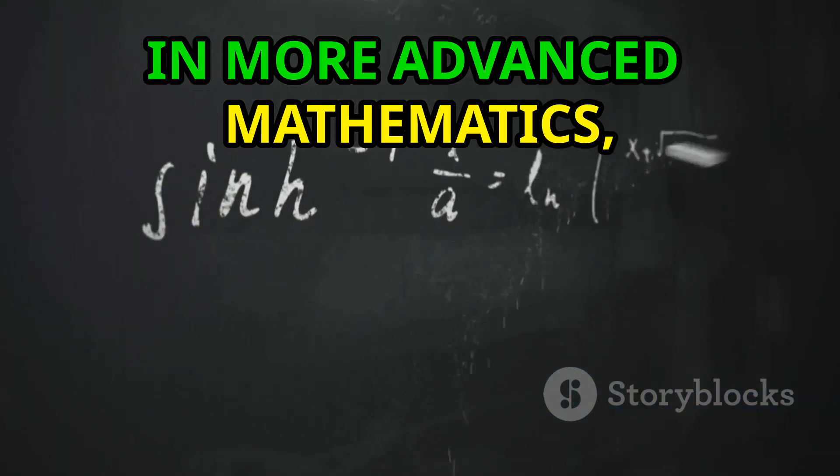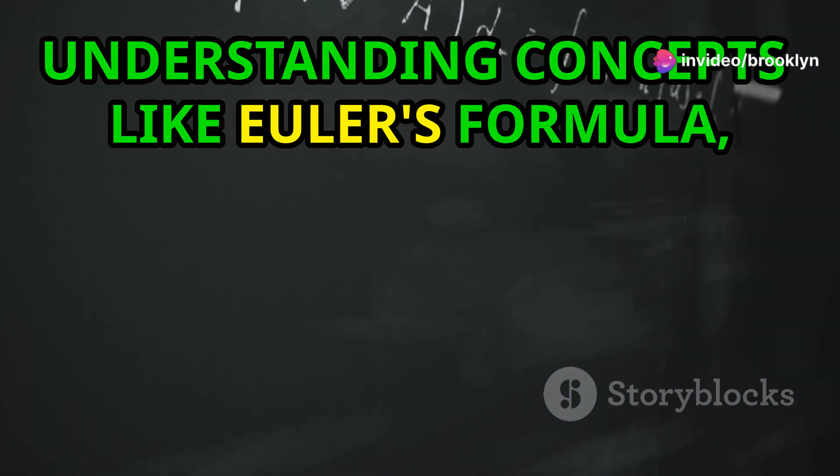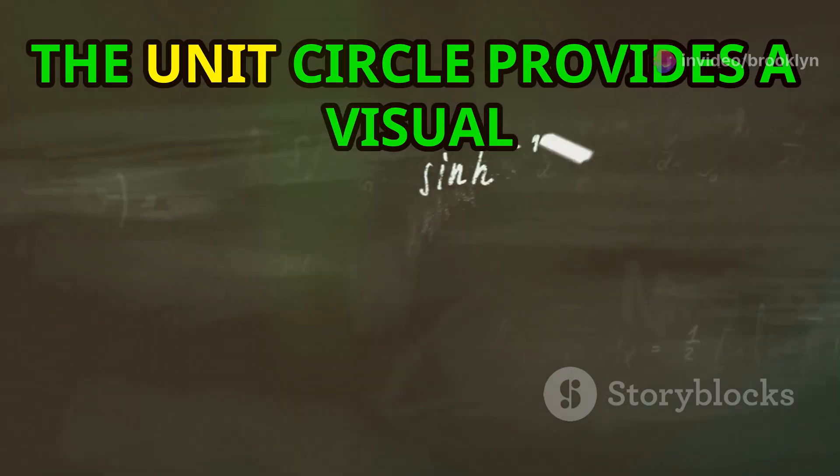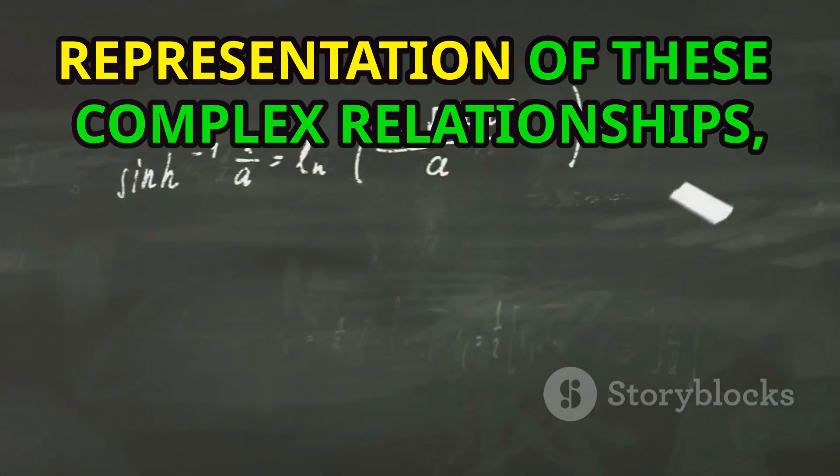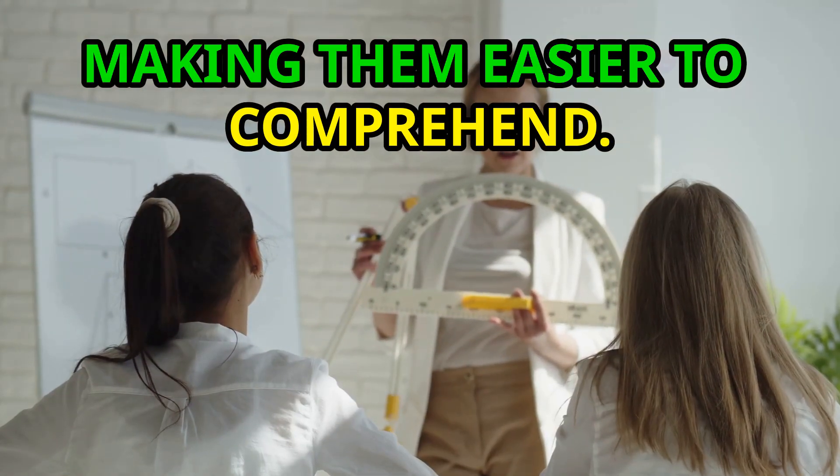In more advanced mathematics, the Unit Circle forms the basis for understanding concepts like Euler's Formula, which connects trigonometry to complex exponentials. The Unit Circle provides a visual representation of these complex relationships, making them easier to comprehend.